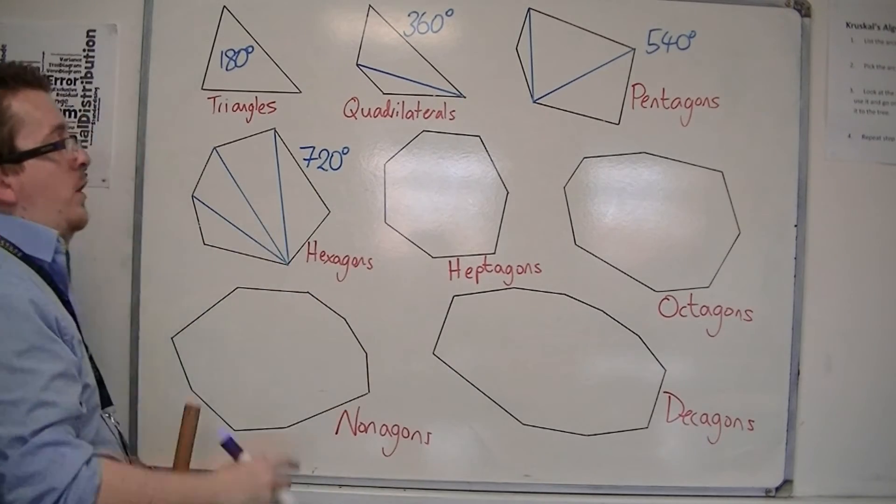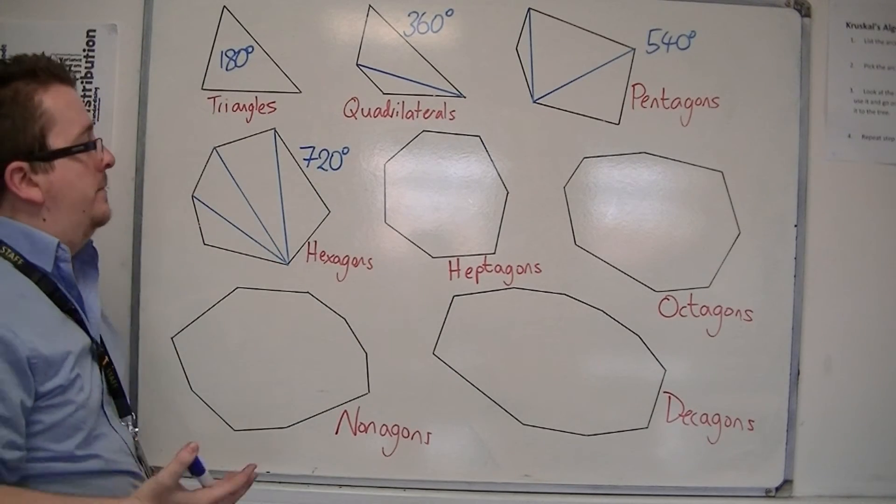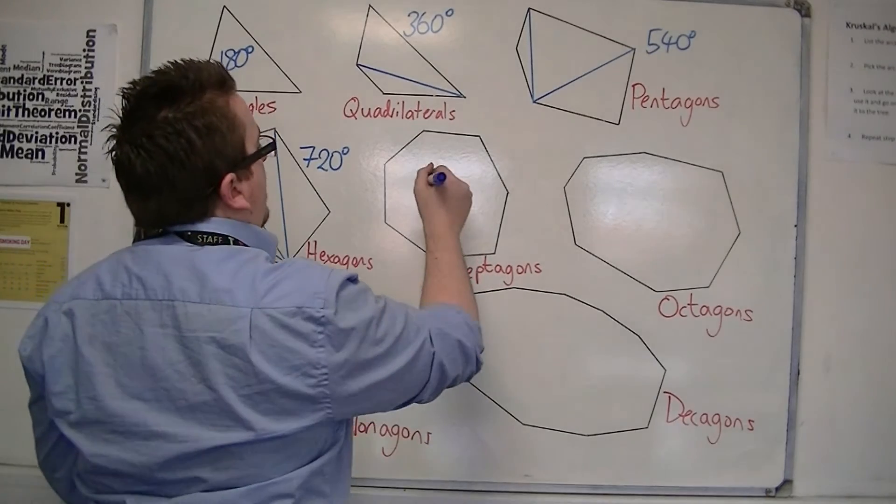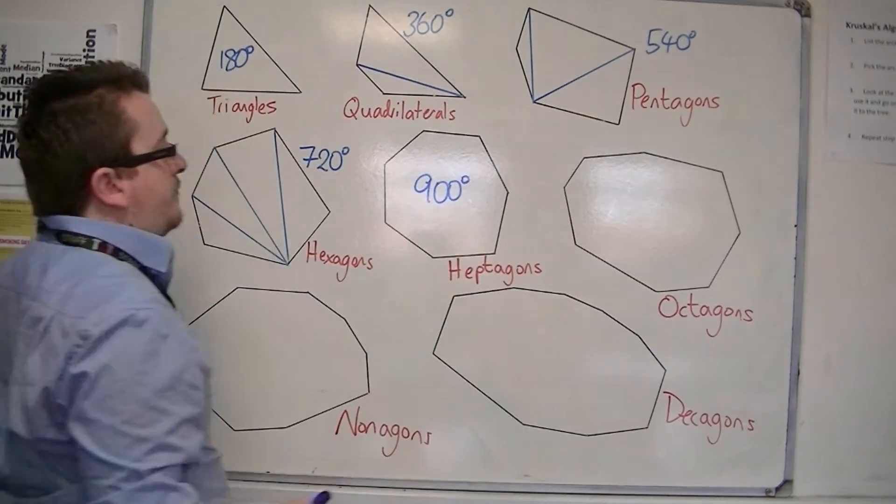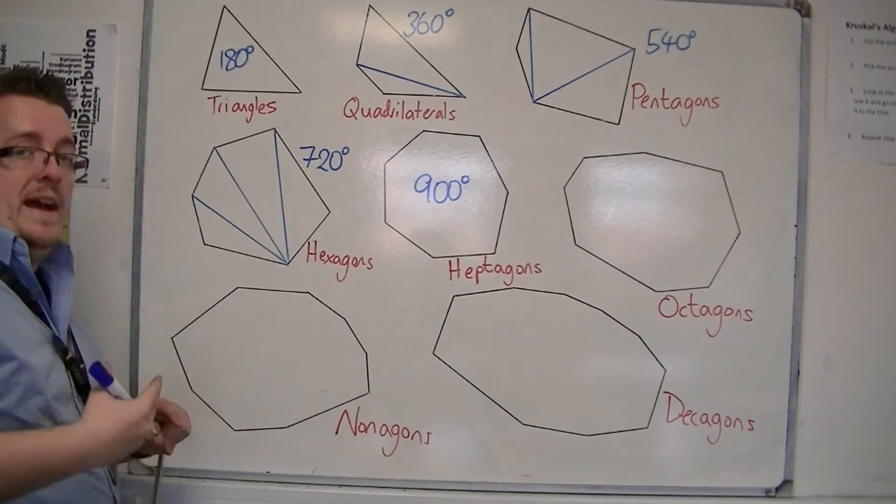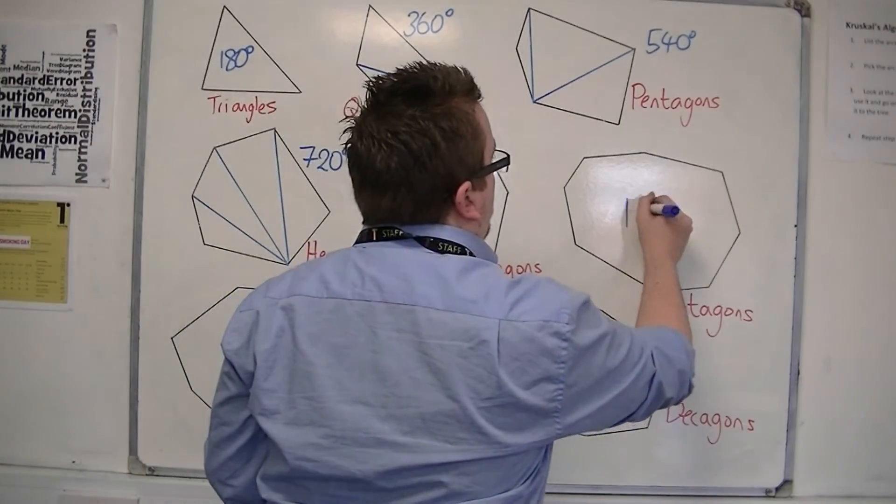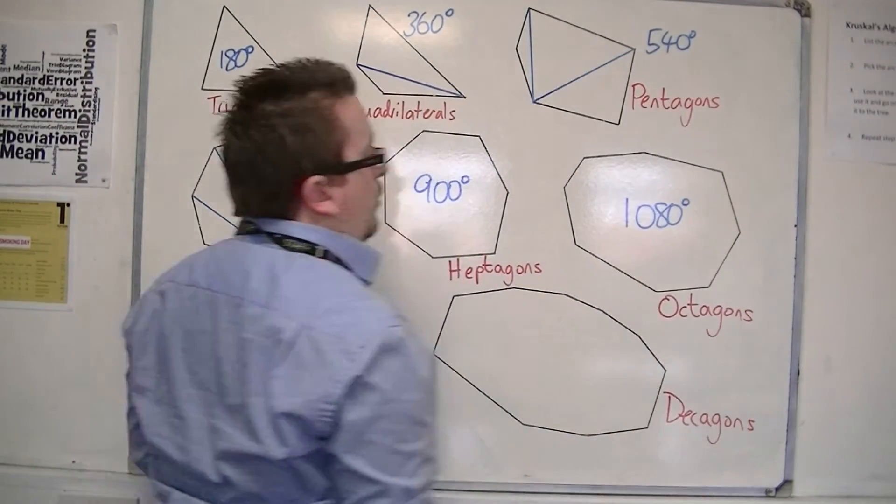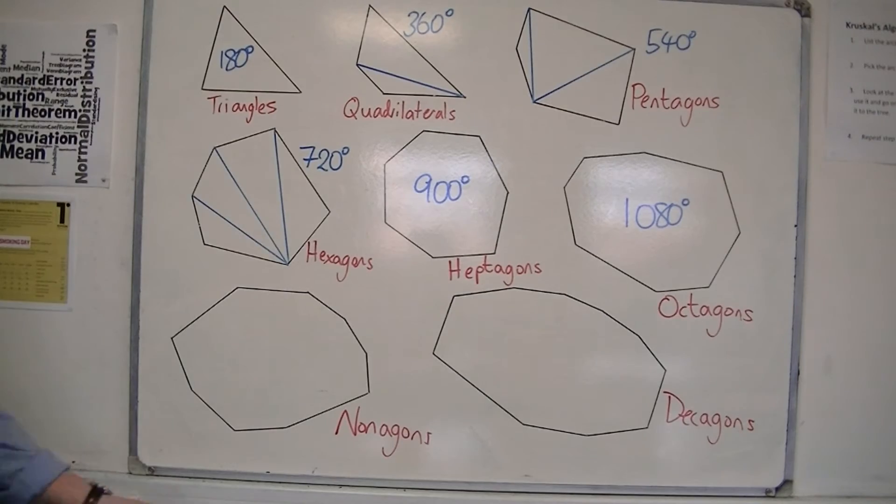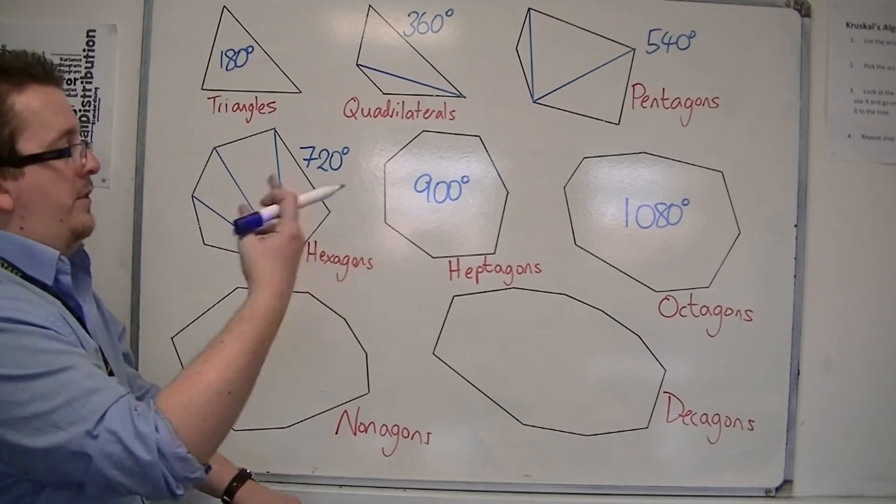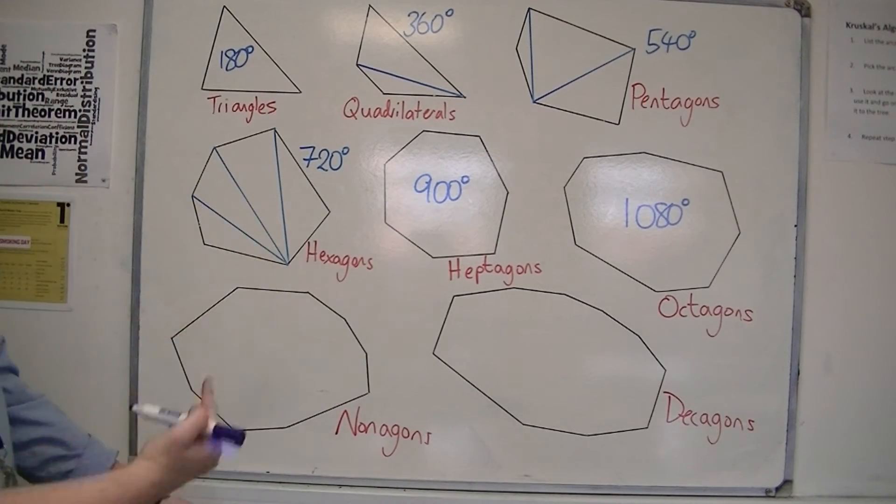So for heptagons, we'll add another 180 on, so that would be 900 degrees. Then for octagons, add another 180. So that's 1080 degrees, or 1080 as snowboarders would say. That's going around 360 three times.